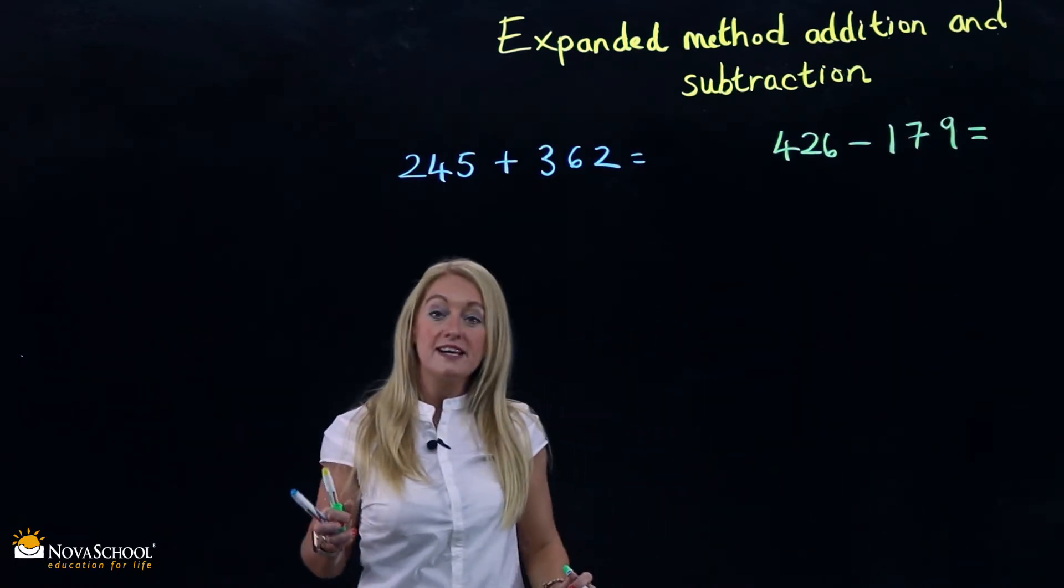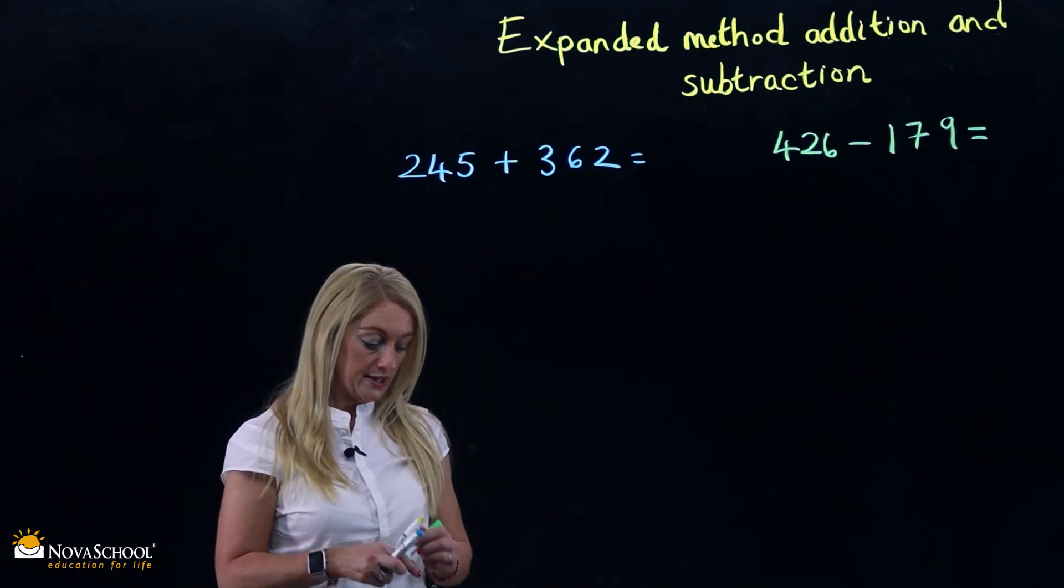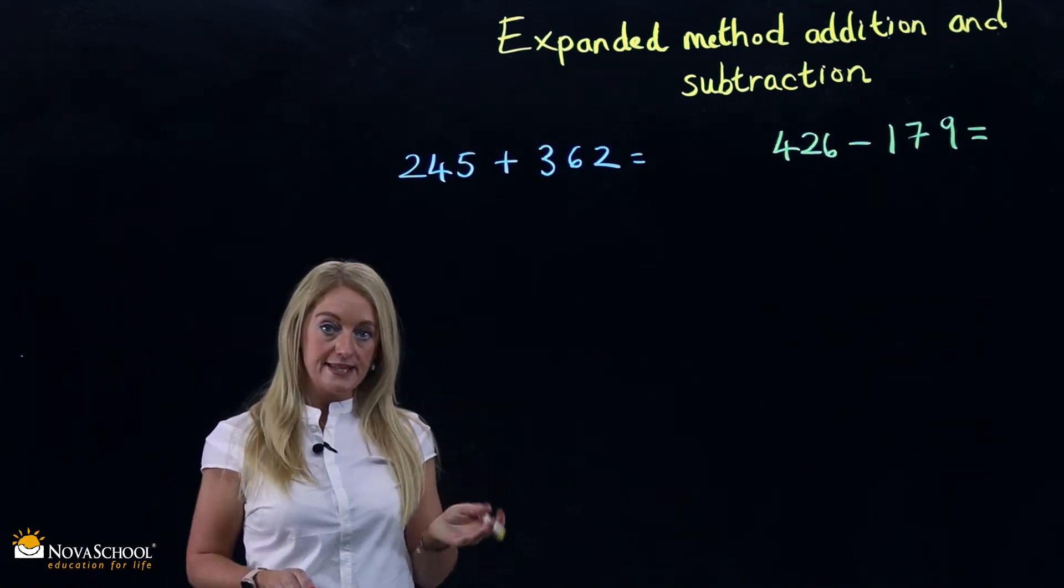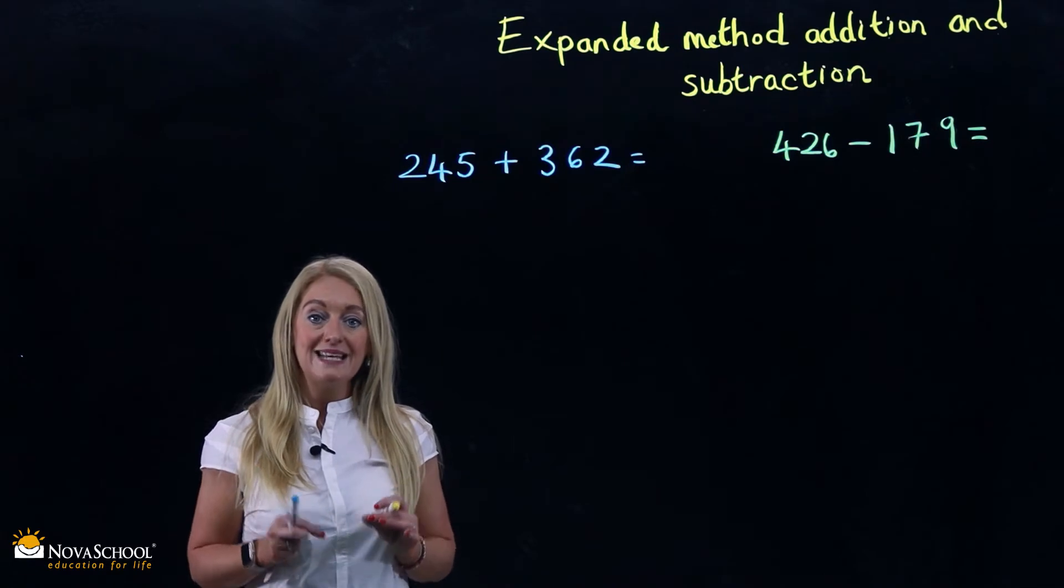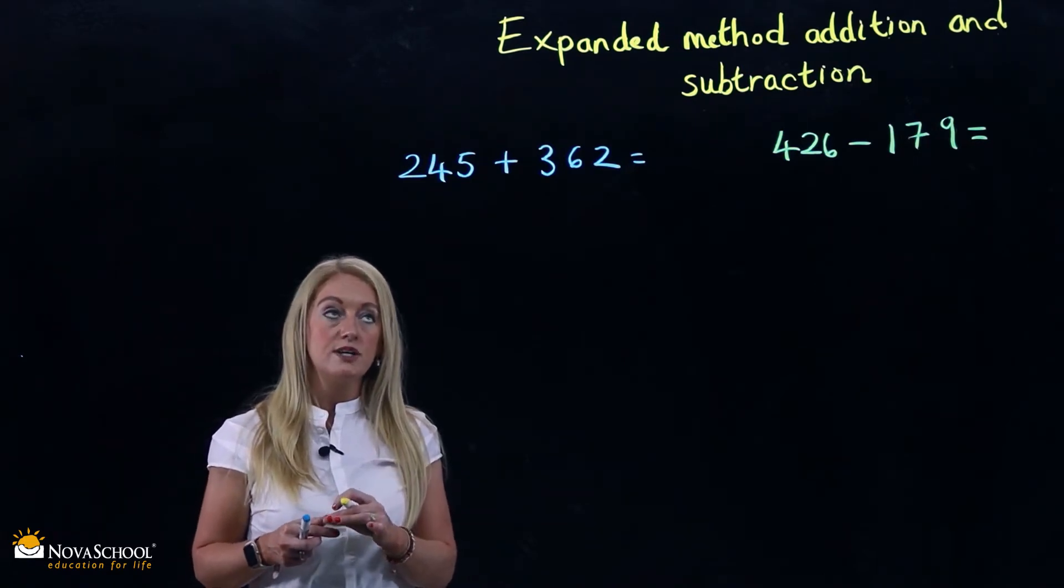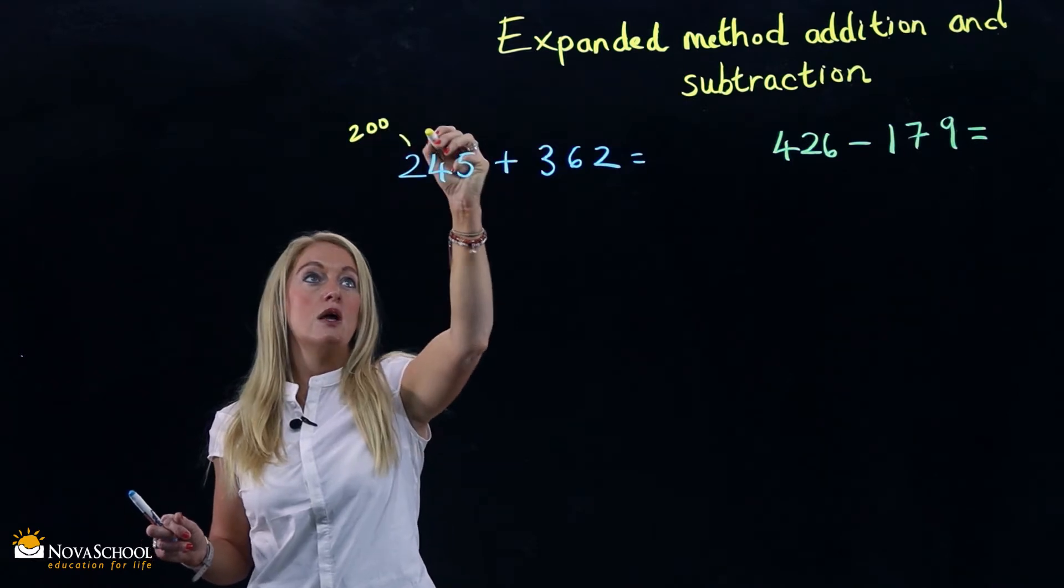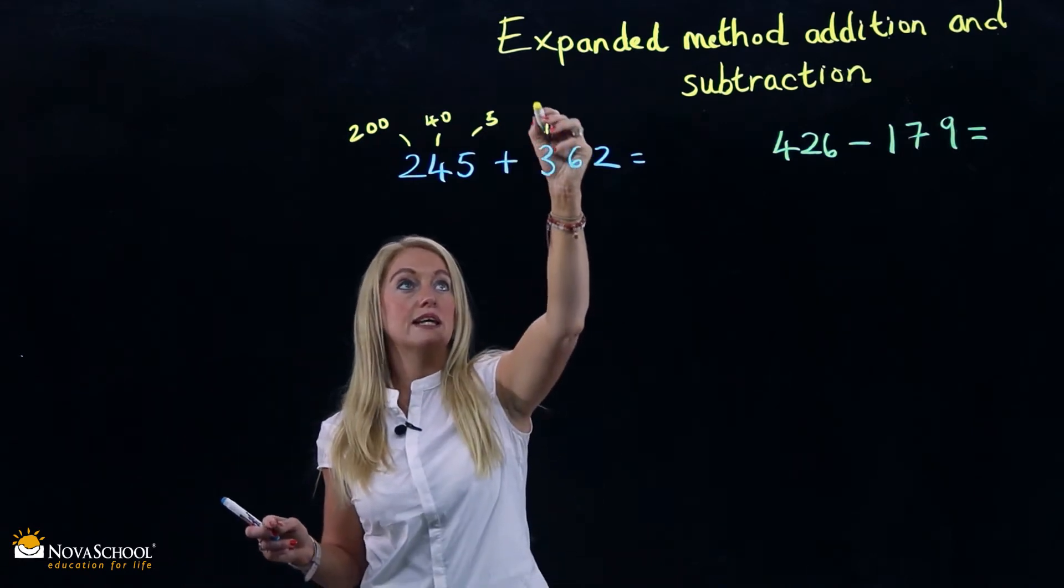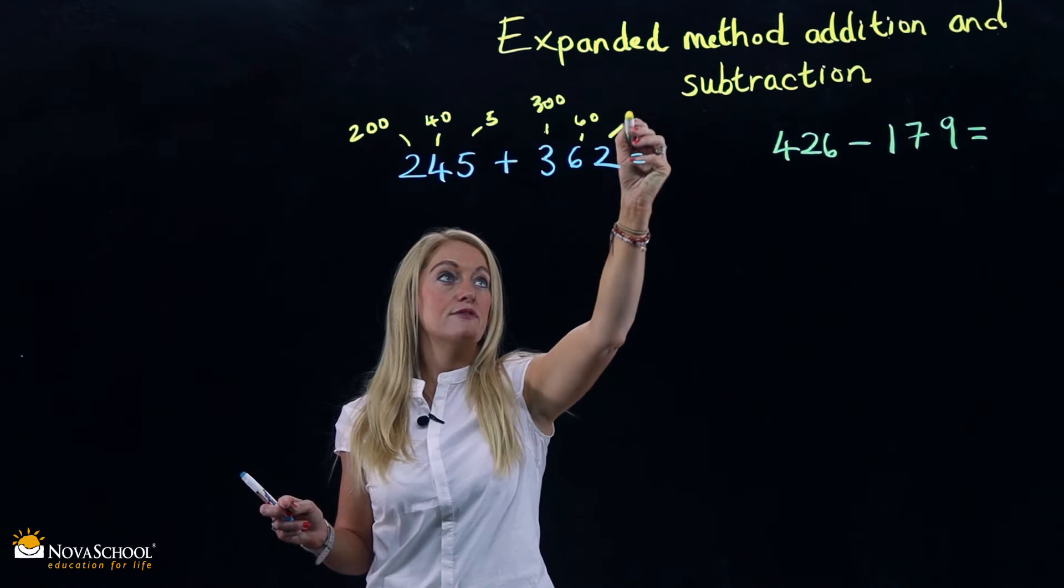Okay, now the expanded method can be used for both addition and subtraction. Let's have a look at how we do it. We partition the numbers. This is very important to understand the place value of the numbers you are dealing with. So we have 200, we have 40, and we have 5. And here we have 300, we have 60, and we have 2.